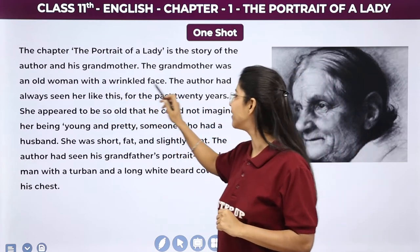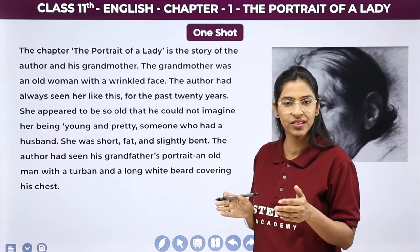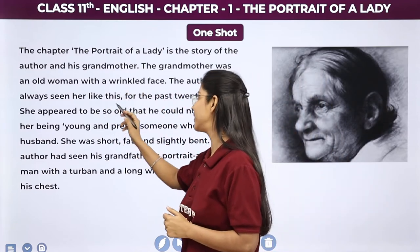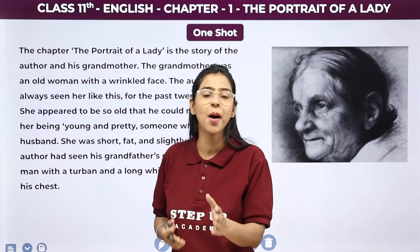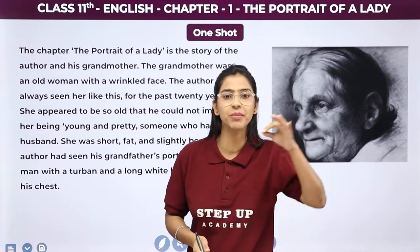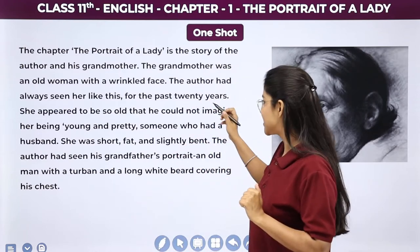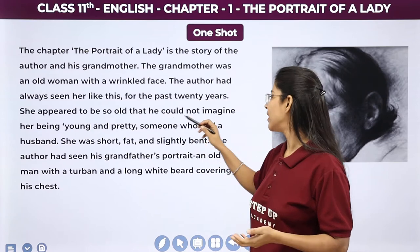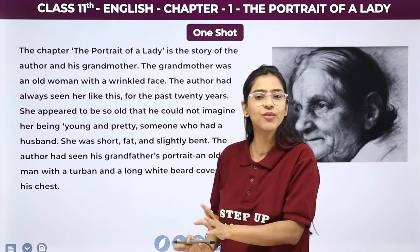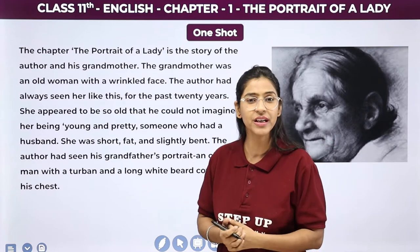The grandmother was an old woman with a wrinkled face. Unkhe chehre pe jhuriyan thi, ek buzurg si aurat thi, chuki hoi thi, chhoti si height ki, thodi moti thi. The author had always seen her like this for the past 20 years. She appeared to be so old that he couldn't imagine her being young and pretty — wo kabhi imagine hi nahi kar sakta ki kya meri grandmother bhi kabhi sundar ya pretty hua karti thi apne time mein.